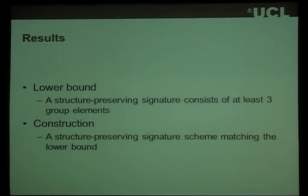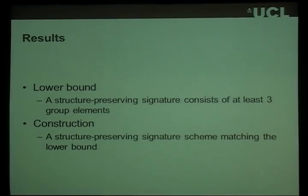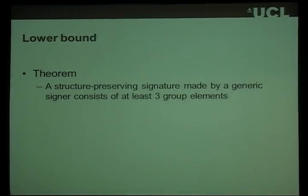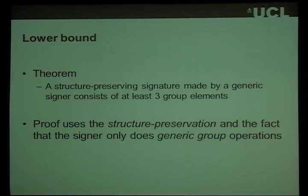Now I'll get to the results. We have a lower bound which says that a structure-preserving signature with a generic signing algorithm must consist of at least three group elements. And we also have a construction which actually uses exactly three group elements — an optimal structure-preserving signature scheme. I'm going to start with the lower bound: if you have a structure-preserving signature scheme with a generic signer, the signatures have to consist of at least three group elements.